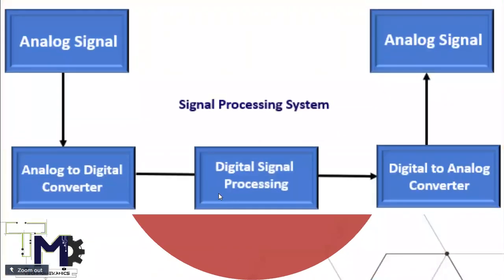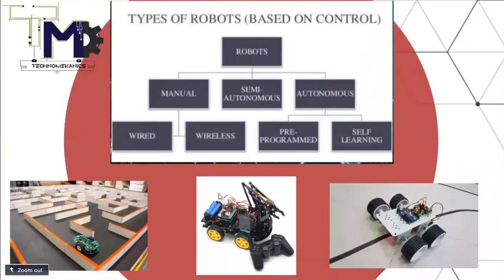The data from the sensors — in the form of electrical and digital signals — needs to be processed so that the robot can analyze the situation. If we implant sensors into the robot, we need a device to analyze the data coming from those sensors. For this, we use a signal processing system, which is introduced as an electronic component to process these signals.